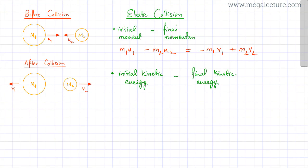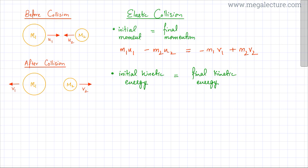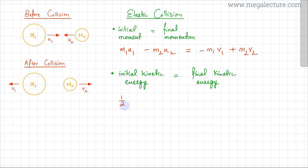Moving to the second statement — the law of conservation of energy — since it's an elastic collision, initial kinetic energy equals final kinetic energy. The formula for kinetic energy is half·M·v². For the first object it's half·M1·U1², and for the second object it's half·M2·U2². So the initial kinetic energy is half·M1·U1² plus half·M2·U2².